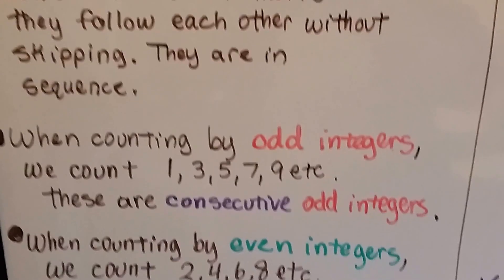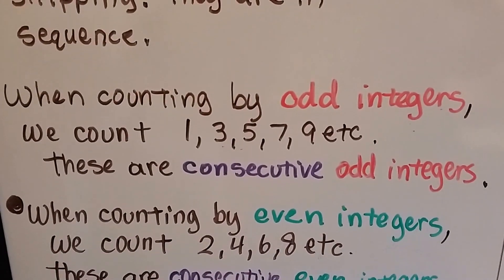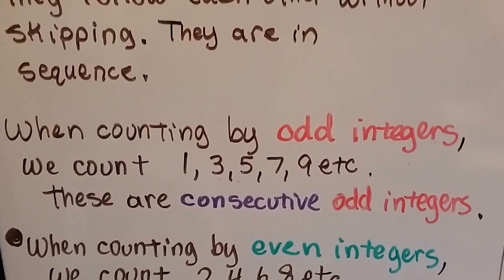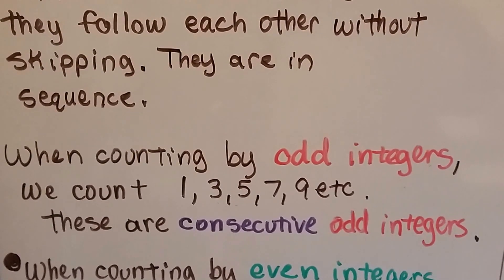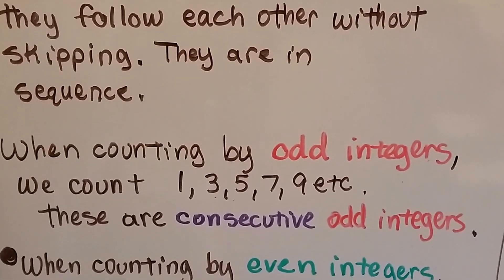When counting by odd integers, we count 1, 3, 5, 7, 9, etc. These are consecutive odd integers. They're all in order, odd numbers.